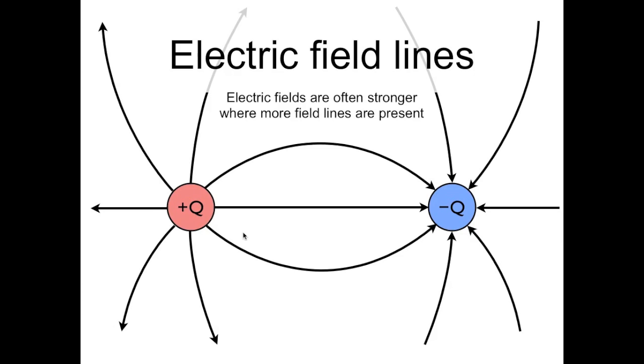Here, we have eight lines coming out or going into each charge, and these charges have the same magnitude. In this highlighted region, which has three field lines passing through it, the field is stronger. While over here, where there's just one field line, the electric field is weaker. Using field line density to assess field strength isn't foolproof, but it can be used as a rule of thumb.